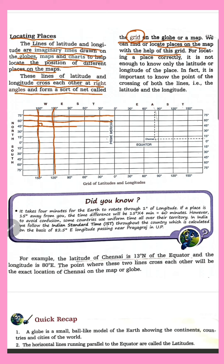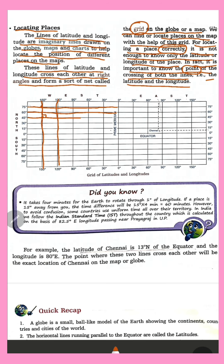We can find and locate places on the map with the help of this grid. For locating a place correctly, it is not enough to know only the latitude or longitude of a place. In fact, it is important to know the point of crossing of both the latitude and longitude lines — where they meet and touch each other.